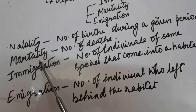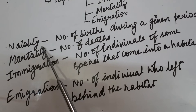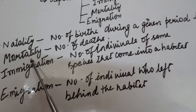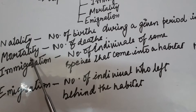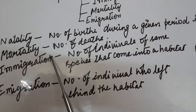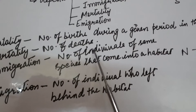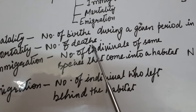Coming to mortality — natality means birth and mortality means death. So mortality is the number of deaths in the population during a given period.